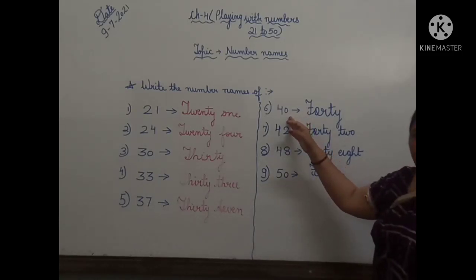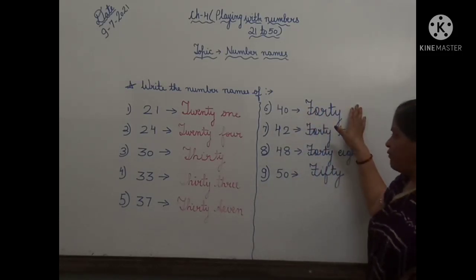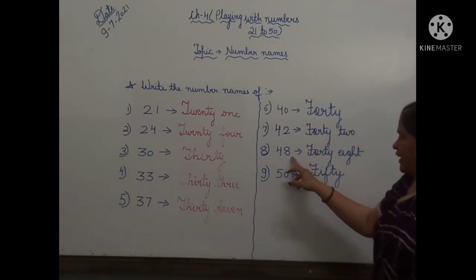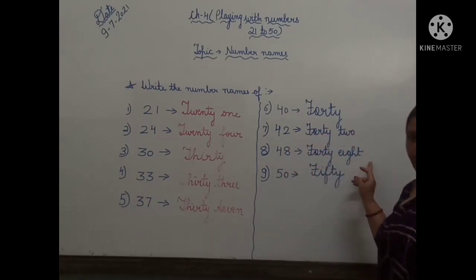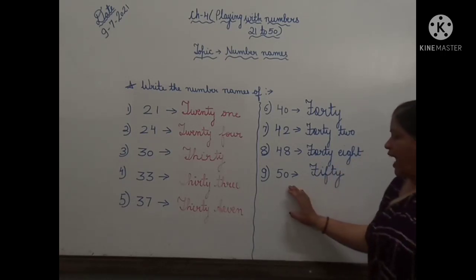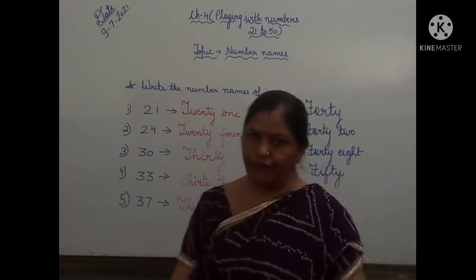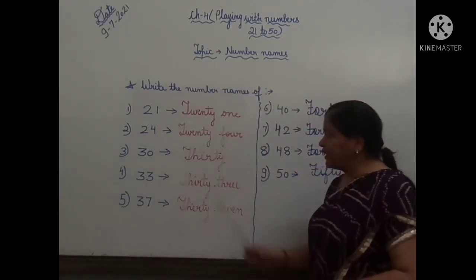This is the spelling of 40: F-O-R-T-Y, 40. Then 42 is 40 and 2. 48 is 40 and the spelling of 8. And the last one is 50: F-I-F-T-Y, 50. Children, you have to learn all these spellings.